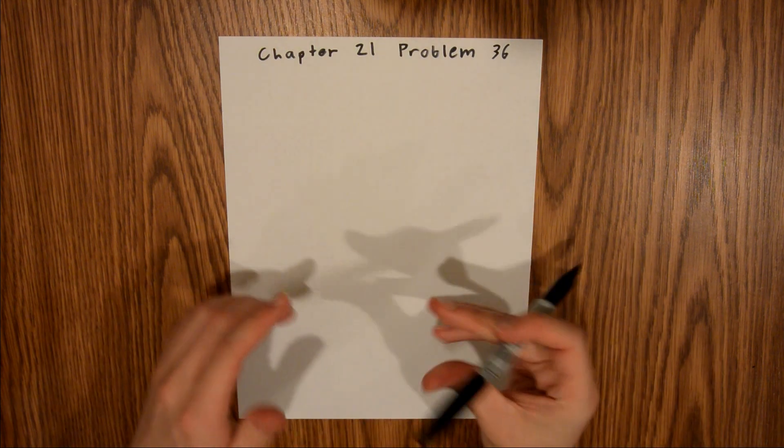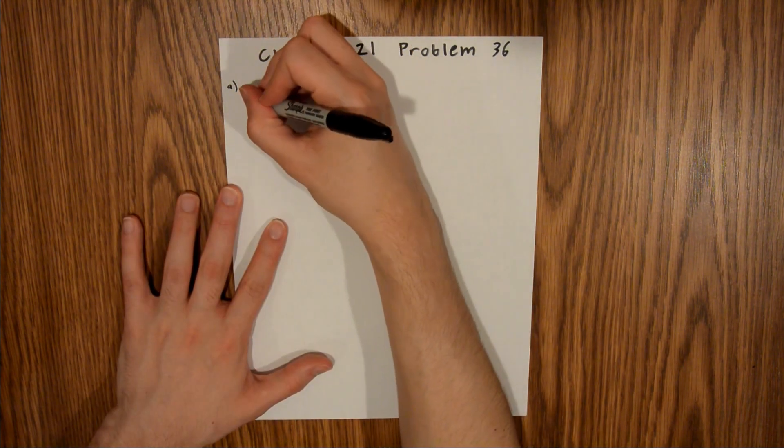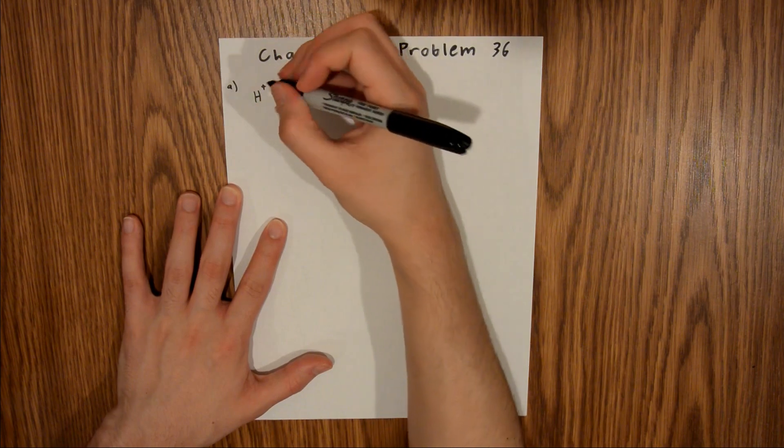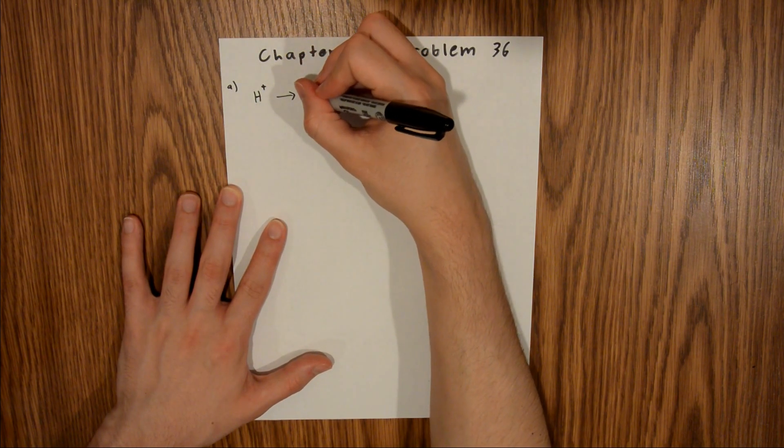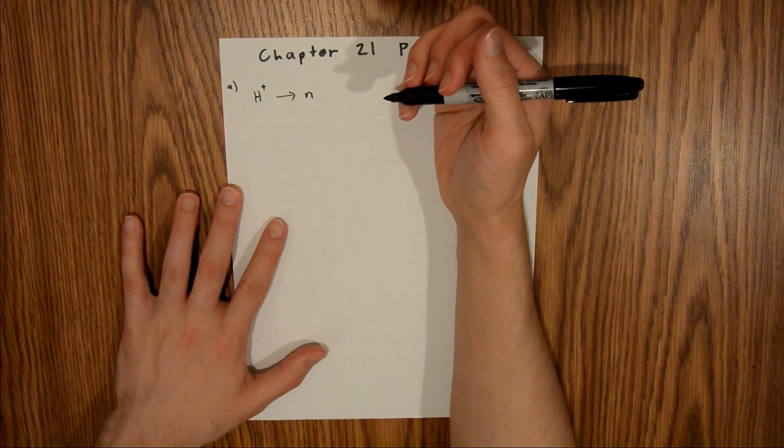In Part A, we are told that a proton transforms into a neutron, and then we are asked if an electron or a positron is also produced.